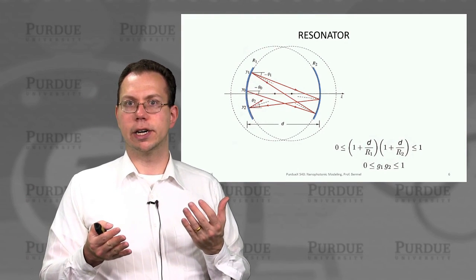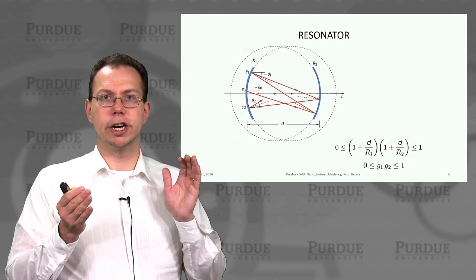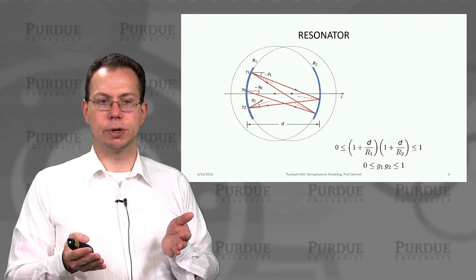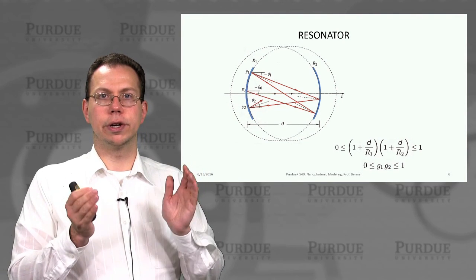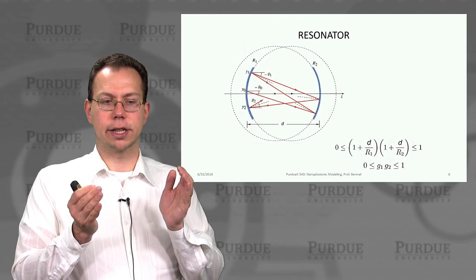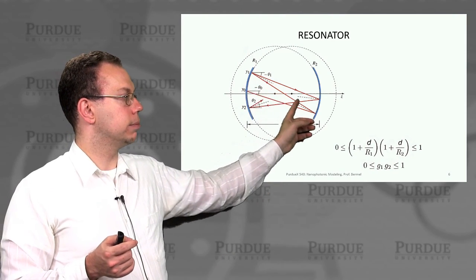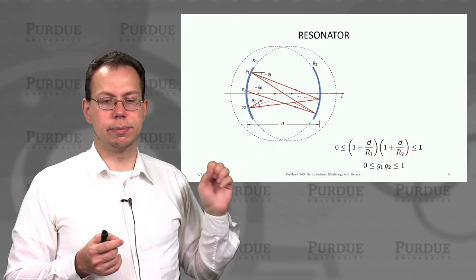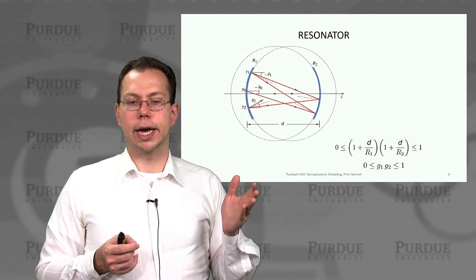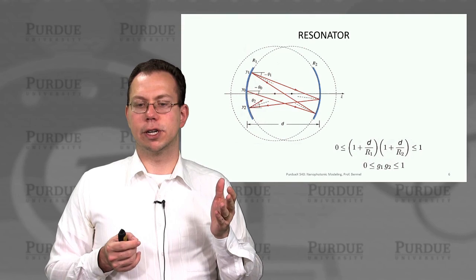Similarly, for a resonator, which is very mathematically similar even though it looks a lot different, where you have a pair of mirrors that are facing each other with a certain curvature, you can imagine that light is bouncing back and forth between those mirrors repeatedly. You can create a similar set of stability conditions.